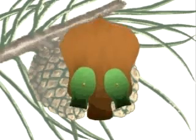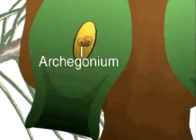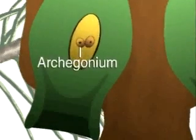The female gametophyte grows, producing two or more archegonia, each of which contains an egg.